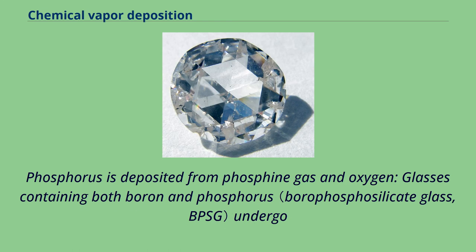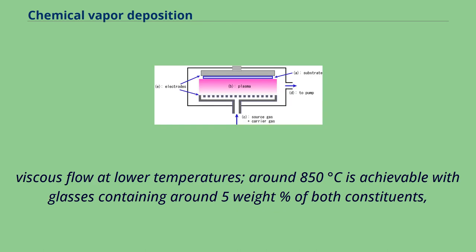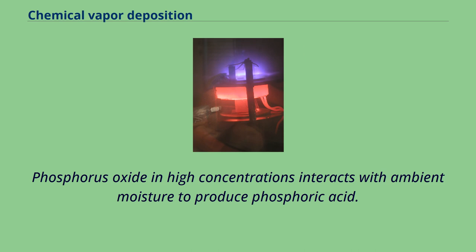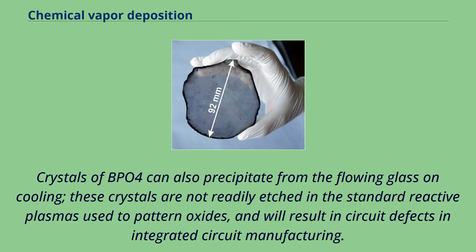Glasses containing both boron and phosphorus undergo viscous flow at lower temperatures. Around 850 degrees Celsius is achievable with glasses containing around 5 weight percent of both constituents, but stability in air can be difficult to achieve. Phosphorus oxide in high concentrations interacts with ambient moisture to produce phosphoric acid. Crystals of BPO4 can also precipitate from the flowing glass on cooling. These crystals are not readily etched in the standard reactive plasmas used to pattern oxides, and will result in circuit defects in integrated circuit manufacturing.